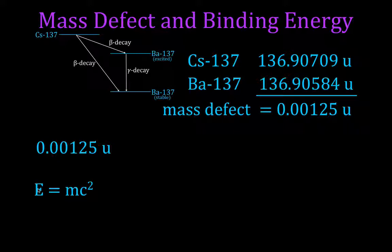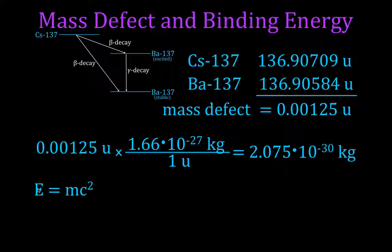So we're going to convert atomic mass units into kilograms. Now this is another constant you just look up. We know that one atomic mass unit is always equal to 1.66 times 10 to the minus 27 kilograms. And that gives us 2.075 times 10 to the minus 30 kilograms.